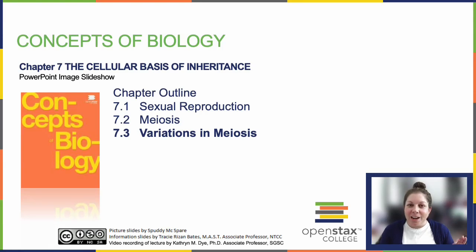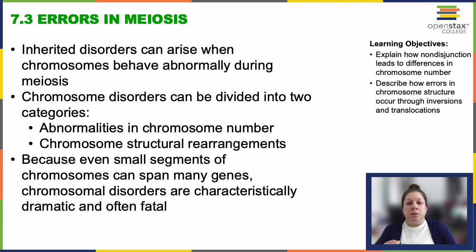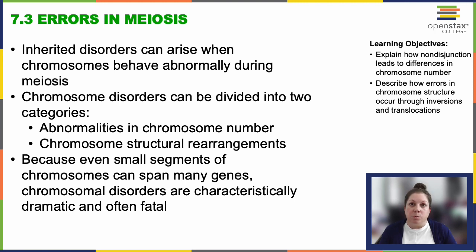Welcome back. I'm Dr. Dai and we are ready to jump into the last section of Chapter 7. We are going to look at some variations in meiosis. First, let's talk about some errors that can occur. Inherited disorders can result from abnormal chromosome behaviors during meiosis. These can be abnormalities in chromosome number or structural rearrangements. These disorders are often severe due to the potential impact on numerous genes within even small chromosome segments.